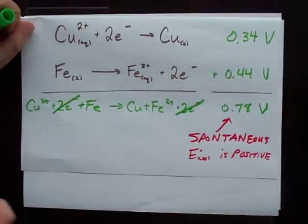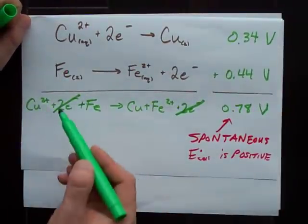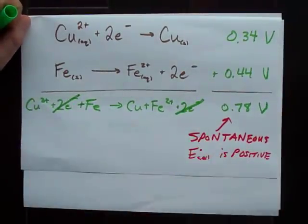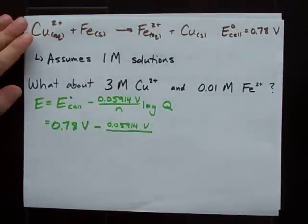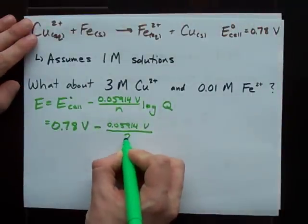But take a look. When we added the two half reactions together, we ended up canceling 2 electrons from the left and right. That means it's 2 electrons that cancel out, or that we divide by 2.